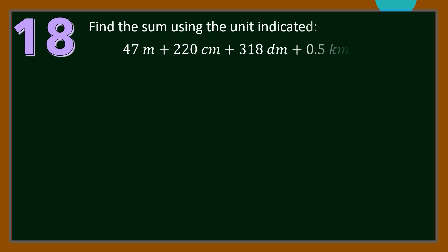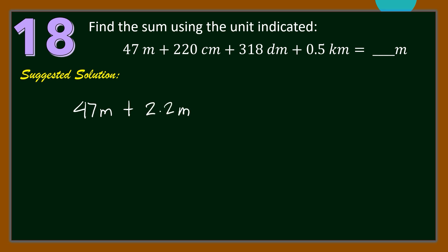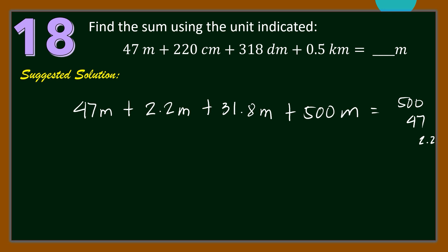Number 18. Find the sum using the unit indicated: 47 meters plus 220 centimeters plus 318 decimeters plus 0.5 kilometers equals how many meters? For our solution, let us convert every term into its meter equivalent. 47 meters is 47 meters, 220 centimeters is 2.2 meters, 318 decimeters is 31.8 meters, and 0.5 kilometers is 500 meters. So we have 500 plus 47 plus 2.2 plus 31.8.